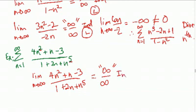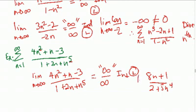Indeterminate. Do L'Hopital's: we get 8n plus 1 over 2 plus 5n to the fourth. We evaluate the limit. The limit is still infinite over infinite, still indeterminate.